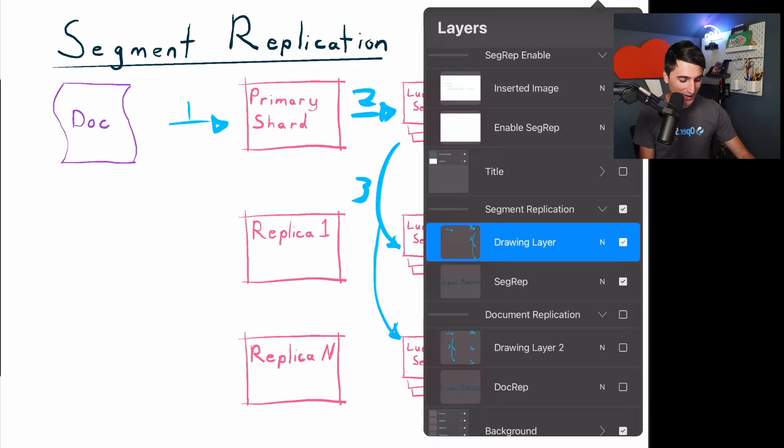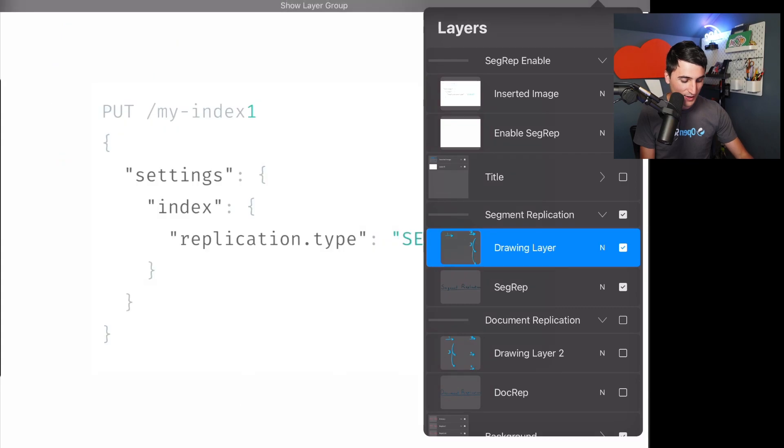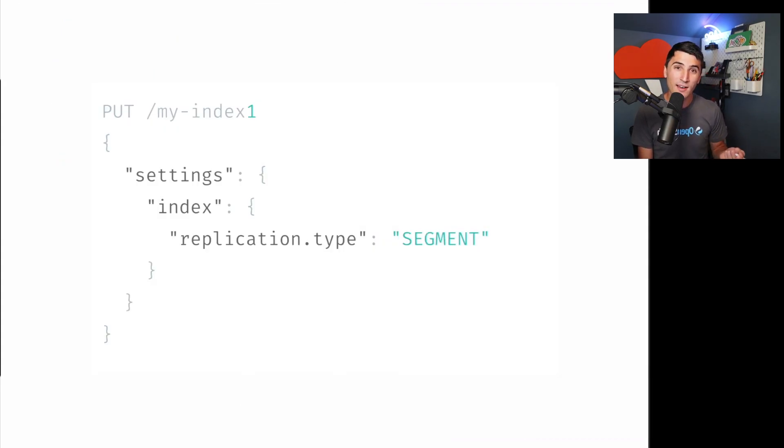Now, you probably want to know how to get going with this, and it's very straightforward. All you have to do is create your new index with the replication.type set to segment. And it does have to be on a new index. So if you have templates and you're rolling over your indexes day over day, you can start trying this as soon as tomorrow. Otherwise, you'll need to migrate your index over into one that has segment replication enabled.